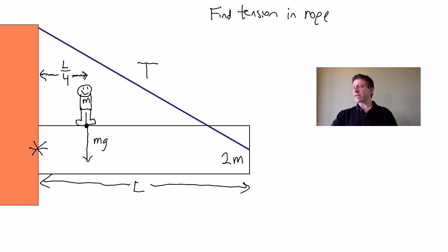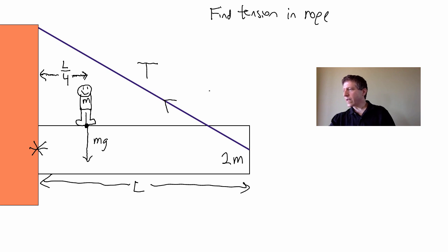What other forces are acting on the sign? We have the tension that we're trying to find — let's label that T. It's important that we have the angle, which would be given to you in a problem unless you had to figure it out. That angle is theta.